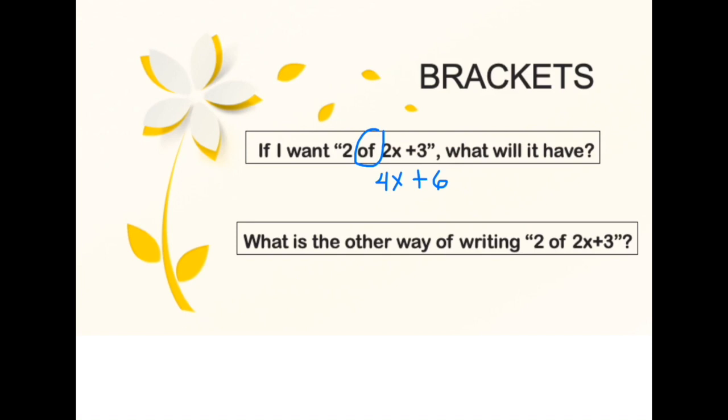So what is the other way of writing 2 of 2x plus 3? That will be 2 bracket 2x plus 3, close brackets. So the word of once again means multiplication. We can multiply each term inside the bracket by the term outside the bracket. So the term outside to each of the terms inside which is 2x and 3, which gives us 4x plus 6.